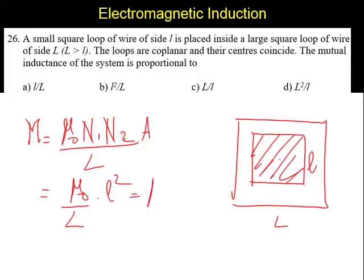So it is μ₀ l² by L. Therefore, the mutual inductance of the system is proportional to l² by L.